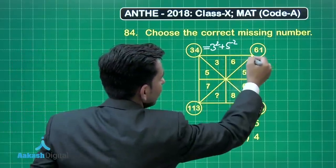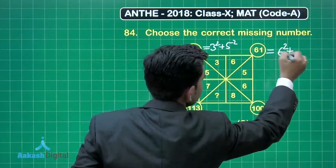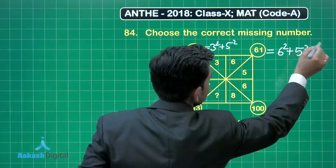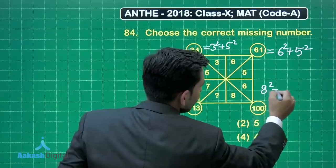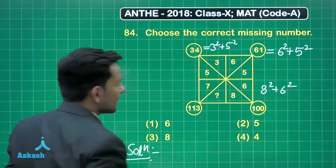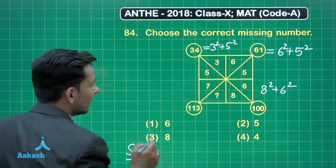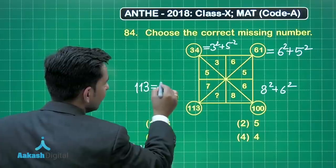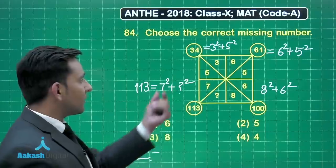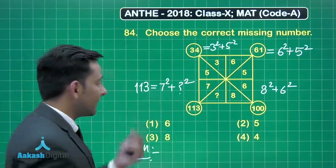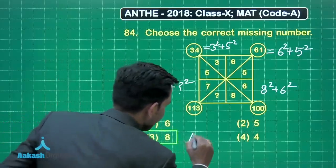Further, the number 61 in the circle is obtained by the sum of the squares of two numbers: 6 squared is 36, plus 5 squared is 25, giving 61. And 100 is obtained by 8 squared plus 6 squared. So we'll apply the same pattern here: 113 is equal to 7 squared plus the question mark squared. The number that replaces the question mark is definitely 8. So 8 is the correct answer, and option number 3 is the correct answer for this question.